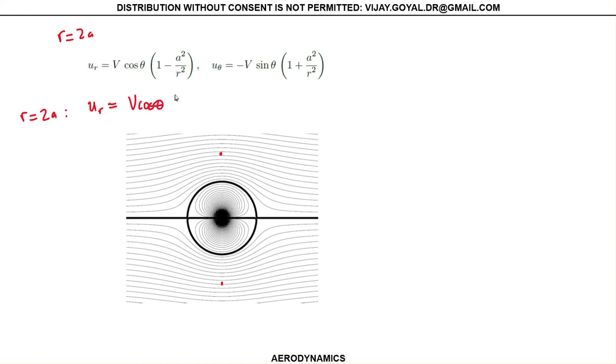And this gives you 3 times 4. And then U_theta gives you minus V sine of theta, and this gives you 5 over 4.